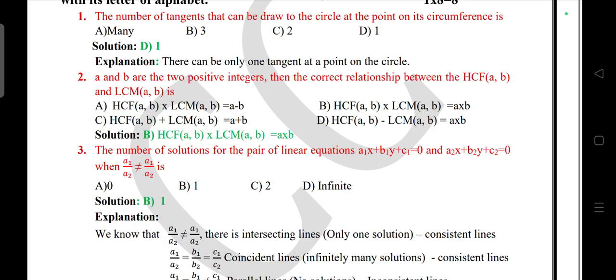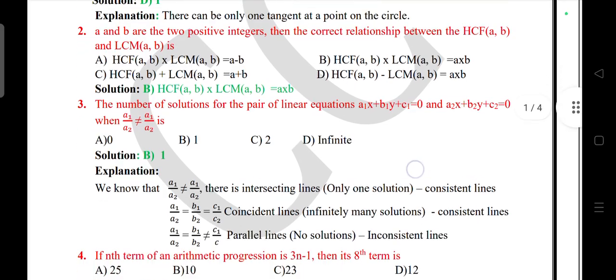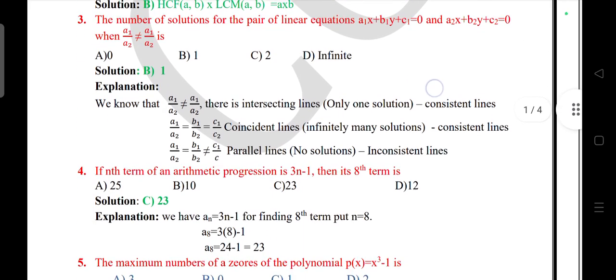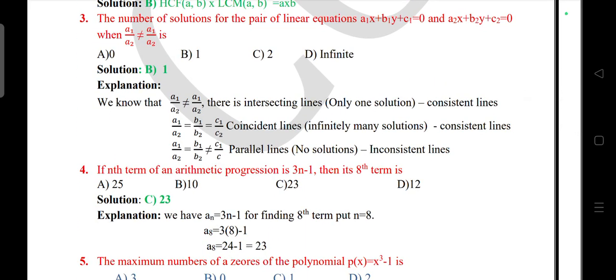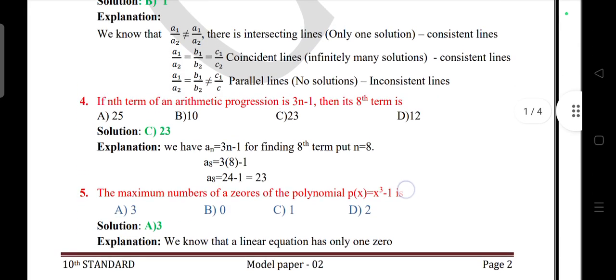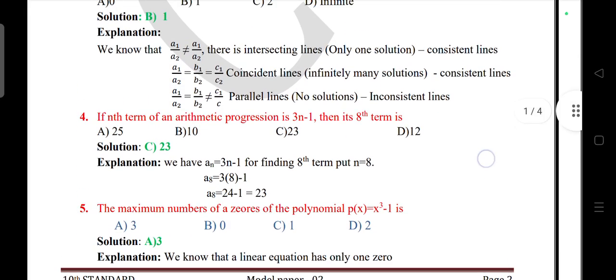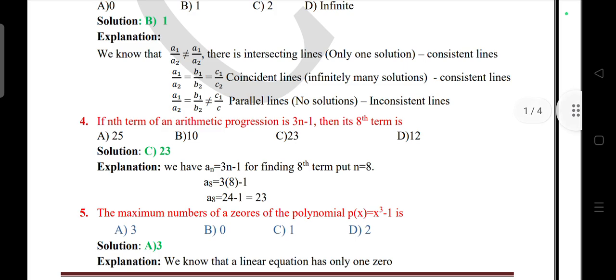Question 2: If A and B are two positive integers, then the correct relationship between the HCF of A and B and LCM of A and B is Answer B). Question 3: The number of solutions for the pair of linear equations is Answer B) 1. Question 4: nth term of arithmetic progression is 3n minus 1, then eighth term is Answer C) 23. Question 5: Maximum number of zeros of polynomial p(x) = x³ - 1 is Answer 3.